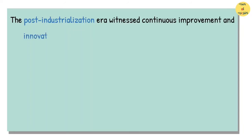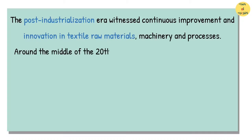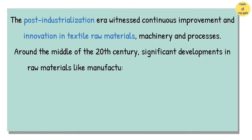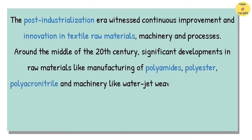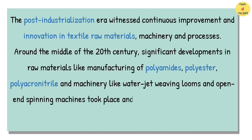The post-industrialization era witnessed continuous improvement and innovation in textile raw materials, machinery, and processes. Around the middle of the 20th century, significant developments in raw materials like manufacturing of polyamids, polyester, polyacronitrile, and machinery like waterjet weaving looms and open-end spinning machines took place and this process of innovation and improvement is still in continuation.